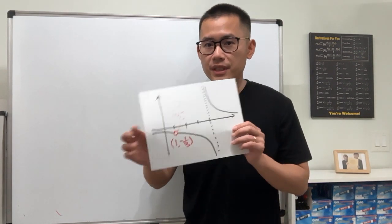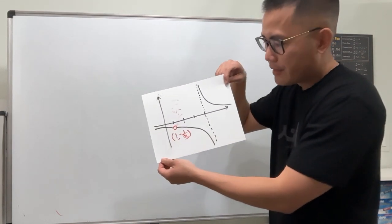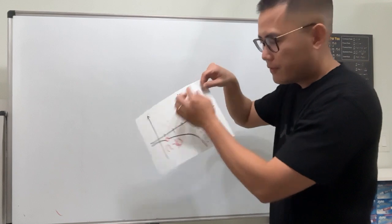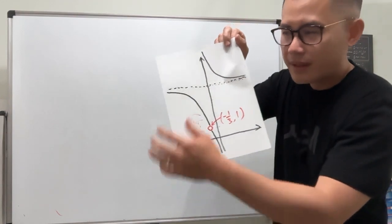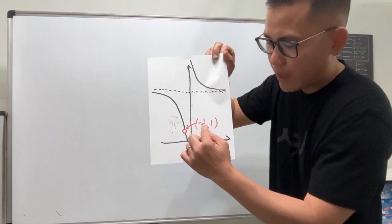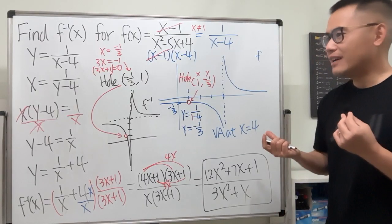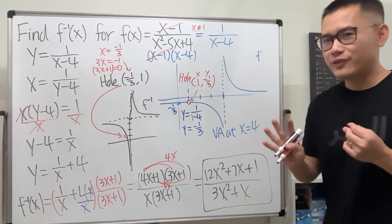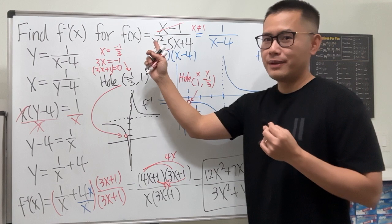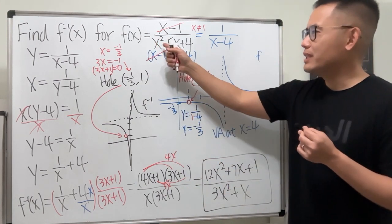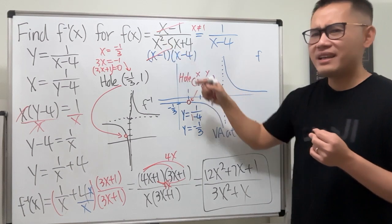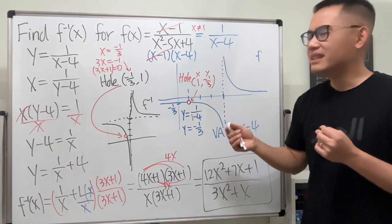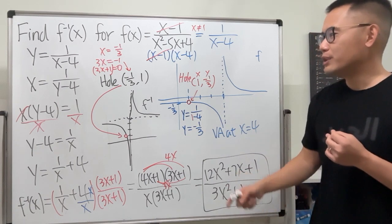To show the reflection: this is our original graph with the hole, and when you flip it across y equals x you get the inverse graph with the hole at (negative one third, 1). You could also try working through the four steps on the original unsimplified expression, but then you'd have to solve a quadratic — y squared minus 5y and so on — which is much harder, and you'd still risk missing the point.